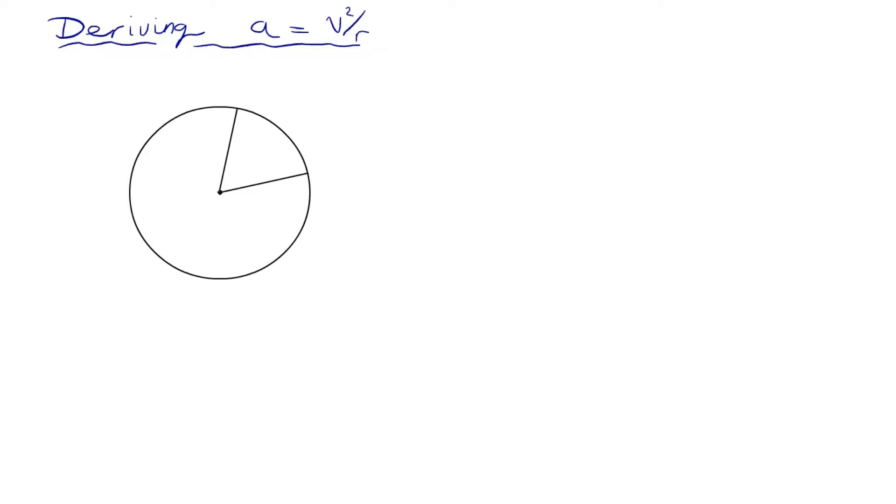OK, so let's have a go at deriving centripetal acceleration, v squared over r, for a body which is going at constant speed v around a circle of radius r.